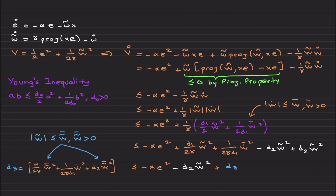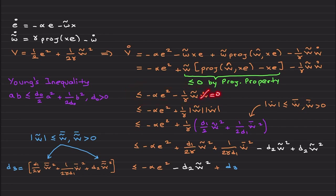I want to be very rigorous and system-theoretically correct and show all steps, because some of you may just be watching for implementation — in that case you can stop and go implement the adaptive controller. Others may be using this for research and want to generalize these concepts. This step is particularly important: if ẇ = 0, then you have v̇ ≤ 0, and you can apply Barbalat's lemma even with the projection operator, recovering asymptotic stability of the error dynamics.